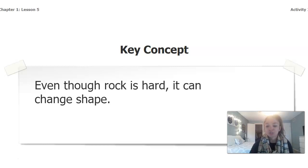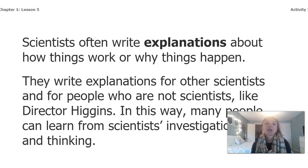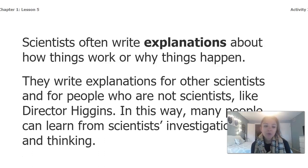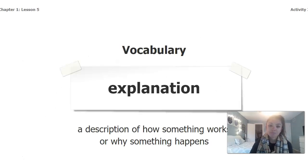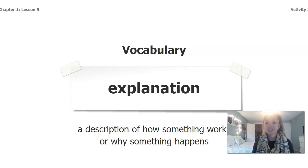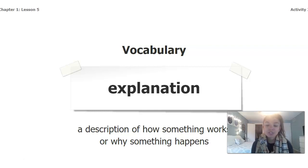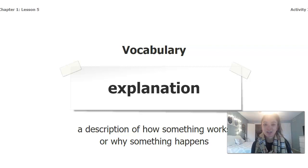Scientists often write explanations about how things work or why things happen. They write explanations for other scientists and for people who are not scientists, like Director Higgins, so that many people can learn from scientists' investigations. An important vocabulary word throughout this unit is explanation: an explanation is a description of how something works or why something happens. You can give an explanation through words or through writing — which is what we're going to do right now. Go ahead and pause the video and copy down the definition for explanation in the vocabulary section at the back of your packet.